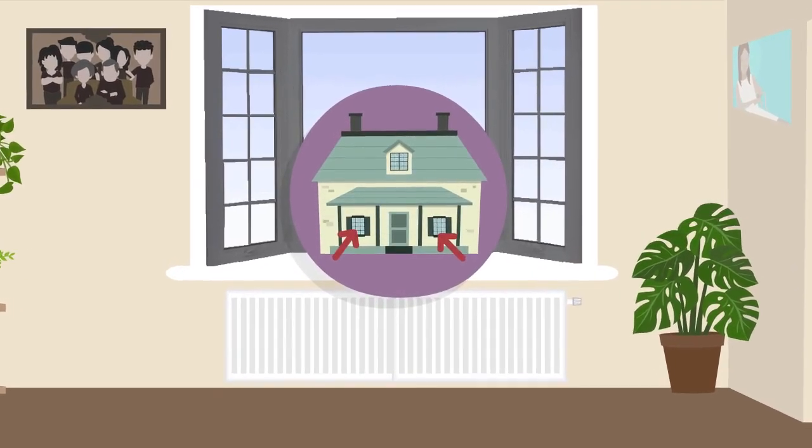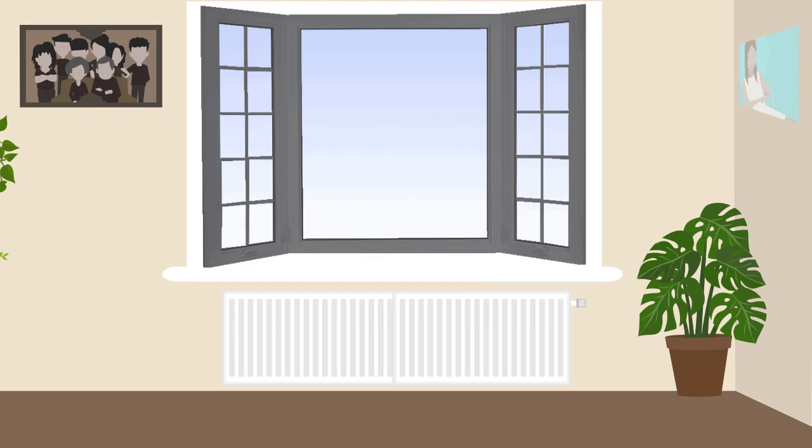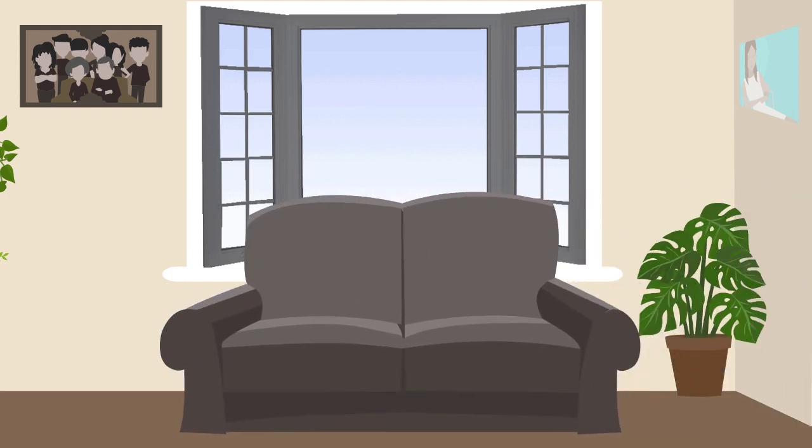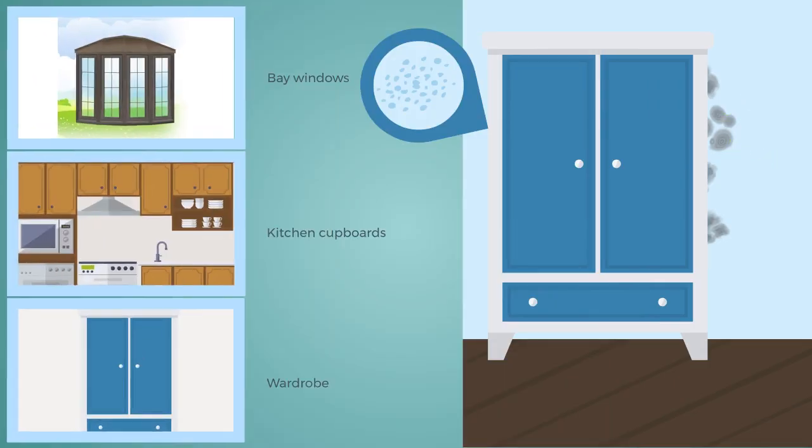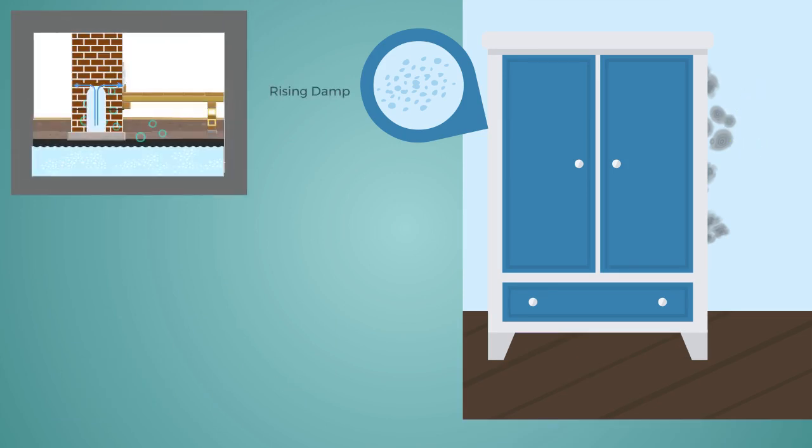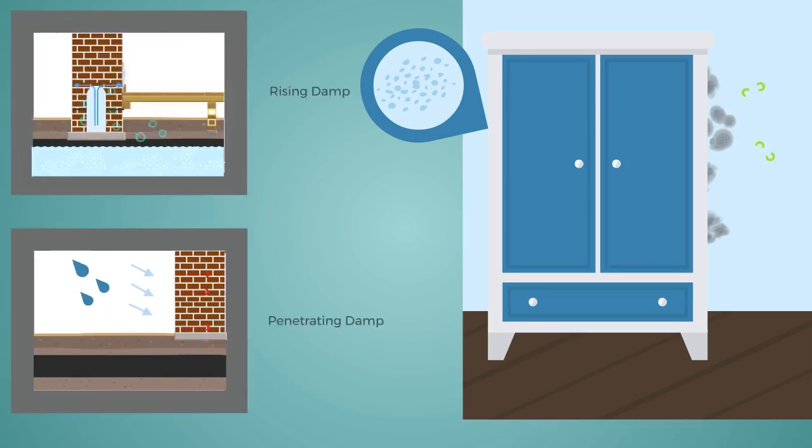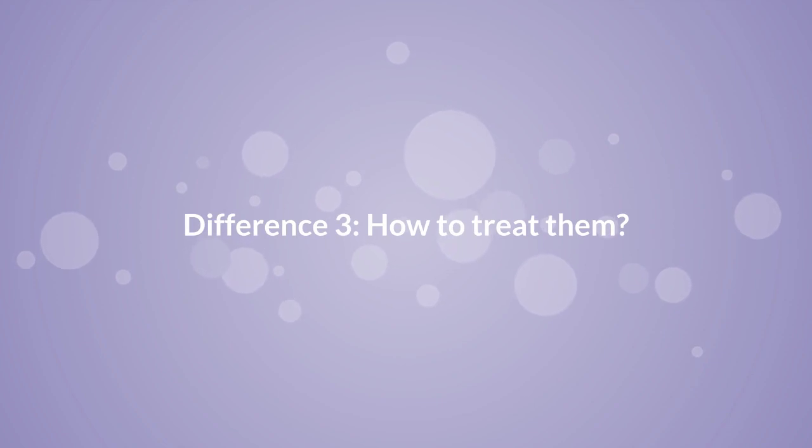Bay windows are another problem area as they project beyond the building line and cool. The bay often contains large furniture that reduces air circulation, and therefore the wall surface becomes damp. These are not normally indications of the presence of rising or penetrating damp.